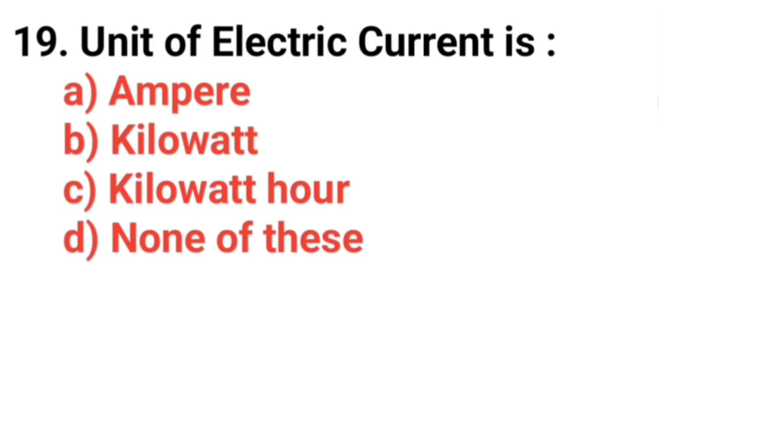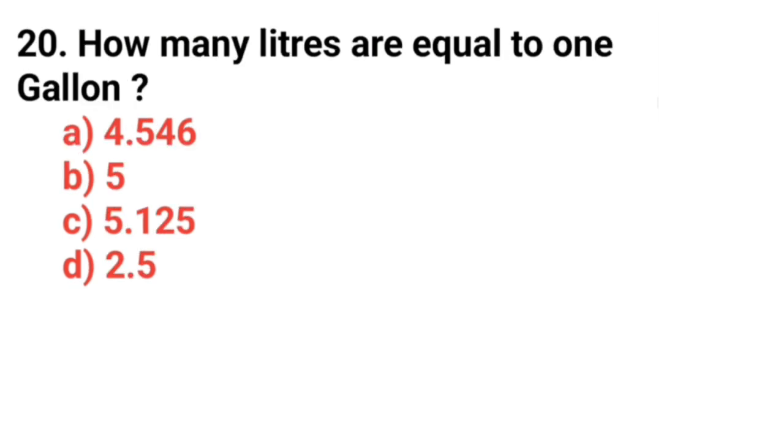Question number 19, unit of electric current is? Answer option A, Ampere. Question number 20, how many liters are equal to 1 gallon? Answer option A, 4.546.